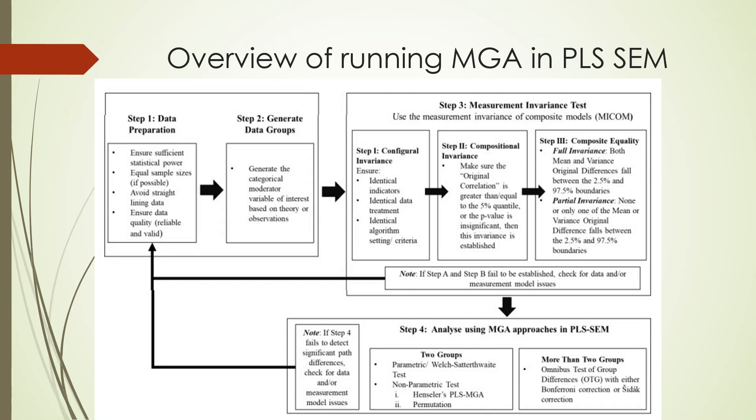The authors have recommended this procedure. Step one: make sure that data preparation is done. Step two: generate the data groups. Then step one is to check configural invariance, step two is compositional invariance, and step three is composite equality — that is, full variance or partial variance.